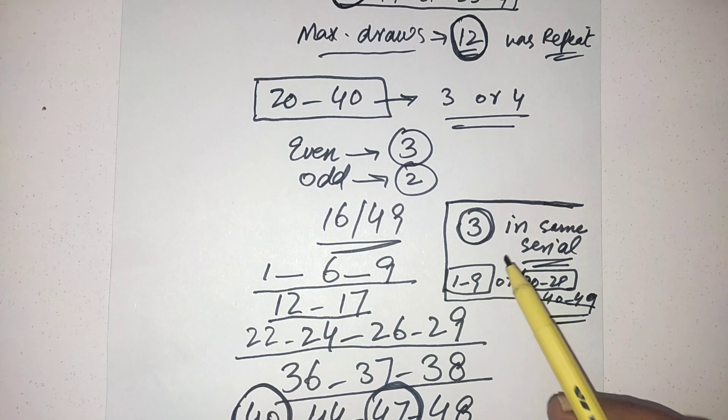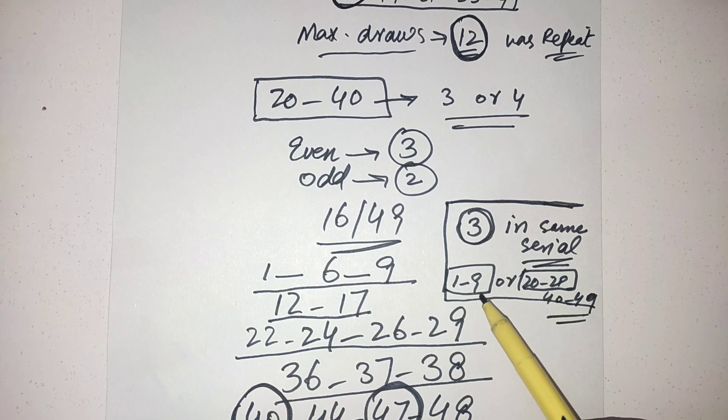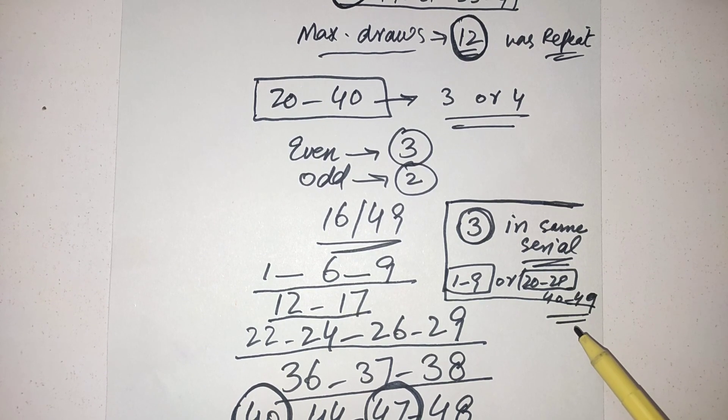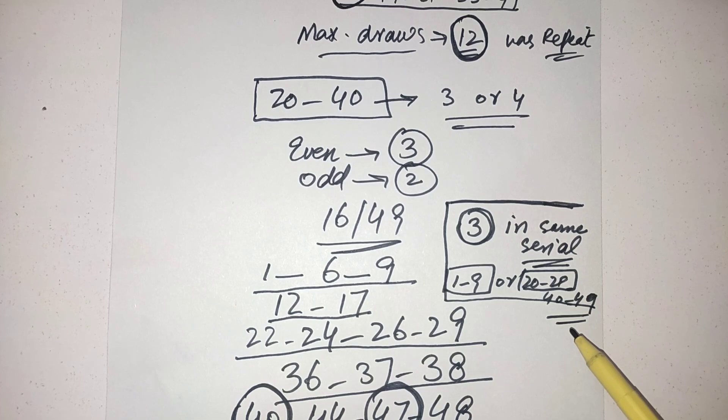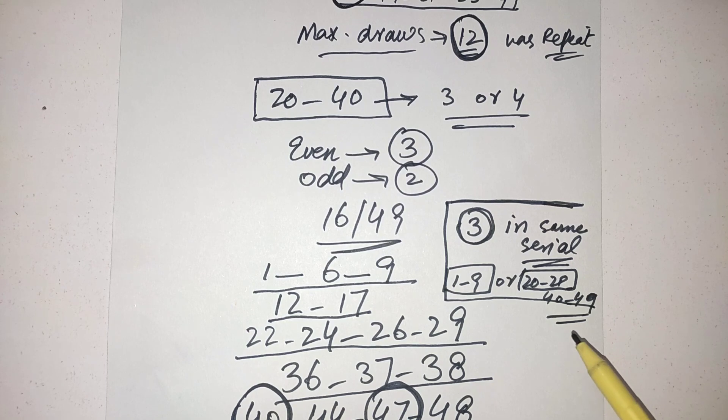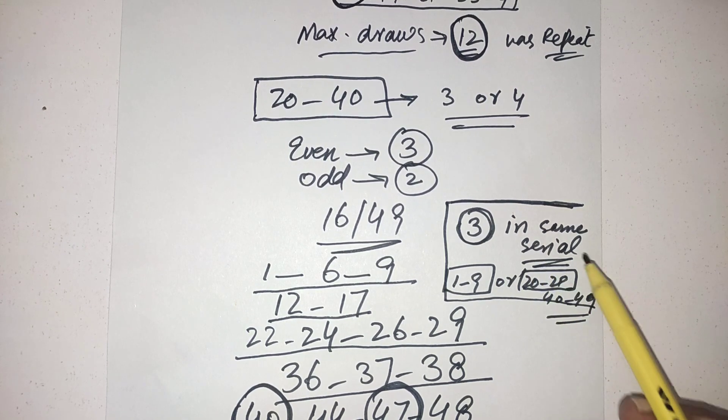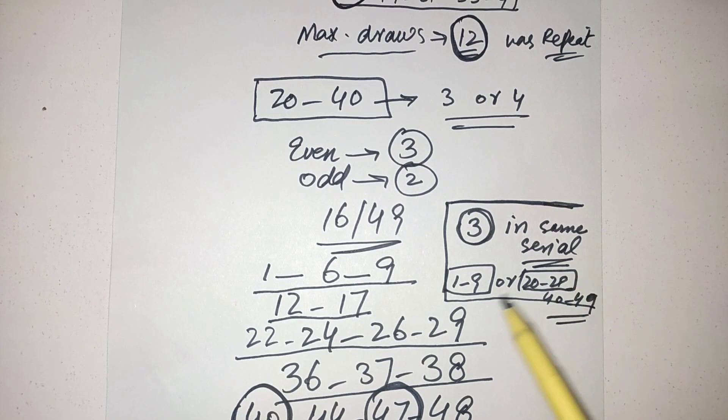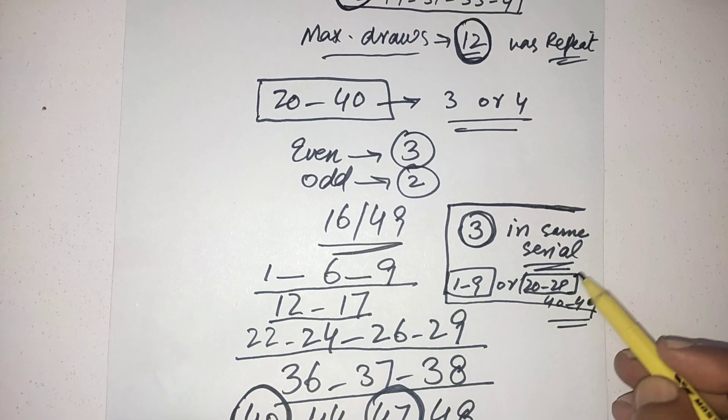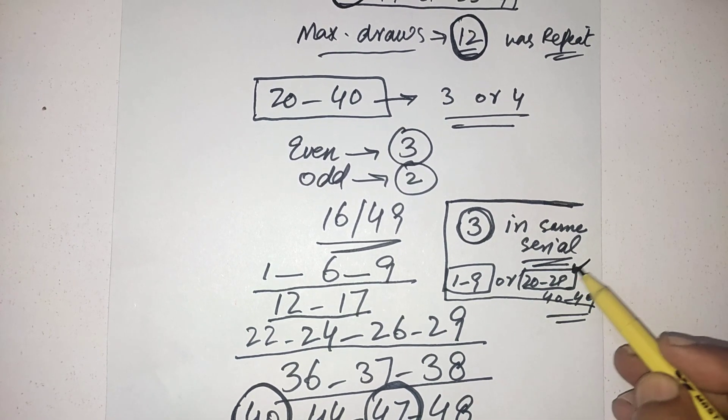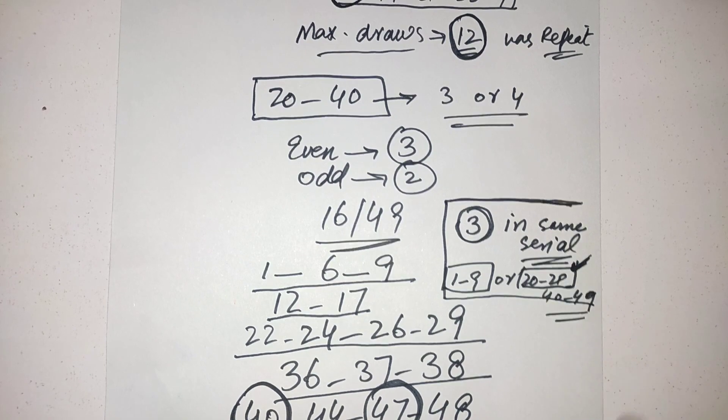You can select three numbers between 1 to 9, or between 20 to 29, or between 40 to 49. It's up to you, it's your decision. There are chances, I see in past history according to my research, there are chances to come three numbers in any same serial. This serial is most favorite to come three numbers for this draw.